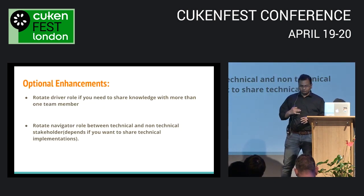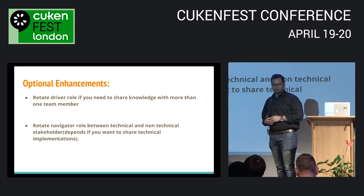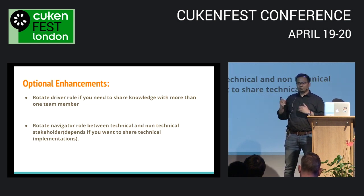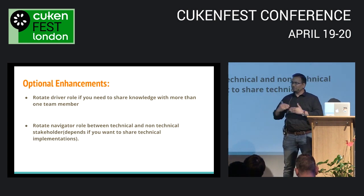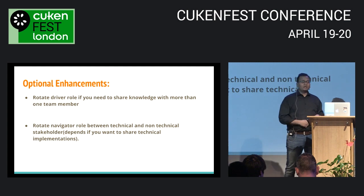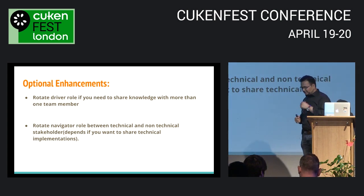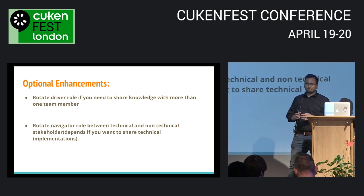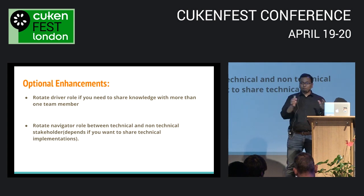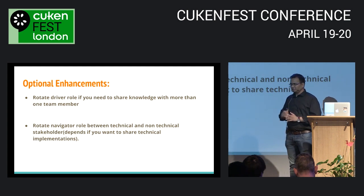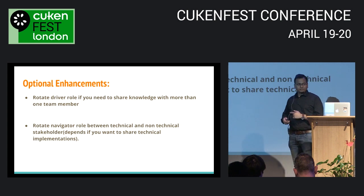There are optional enhancements. If you have more than one new team member, you can switch driver roles between them — for the first half of a functionality, the first new QA drives and the second observes; in the second half, switch them. Similarly with navigators — if a new developer joins, they're more interested in technical implementations than business requirements, so you can have a BA navigate the first half and a developer navigate the second half to share implementation details. You can rotate both drivers and navigators.